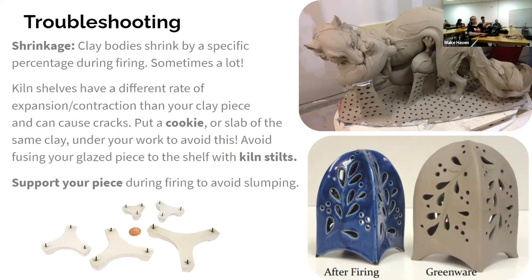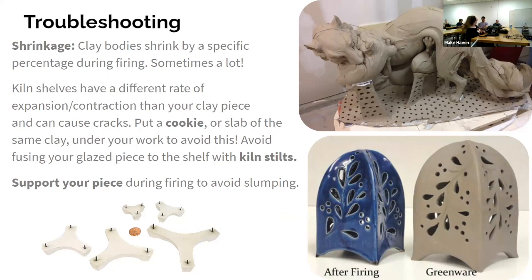Clay bodies shrink during firing. You can see here a blue fired piece and the greenware — the same piece made with a mold — and look at the difference in size. Every clay body gives you the shrinkage percentage so you can calculate exactly how much smaller it will be, which matters if you're trying to get things to fit together. Usually the higher the fire, the more the shrinkage, though it also depends on the mix in the clay body.